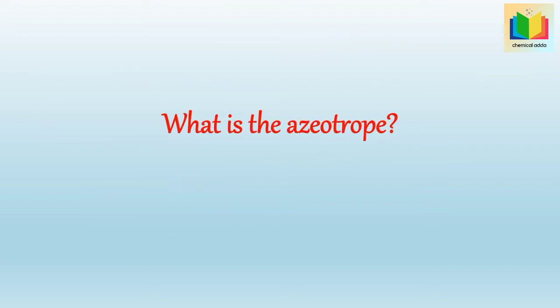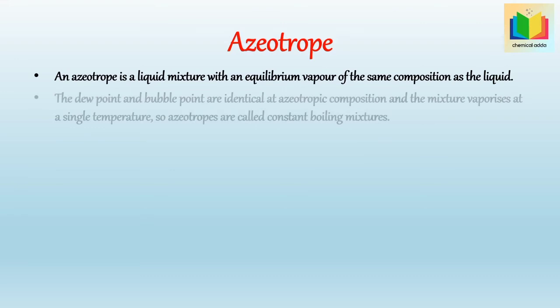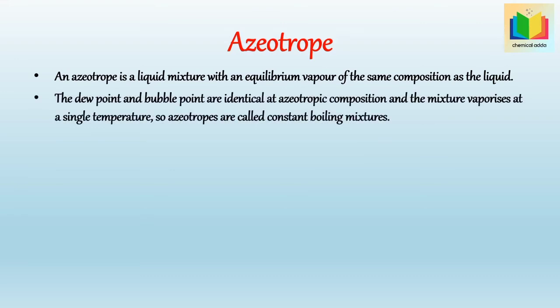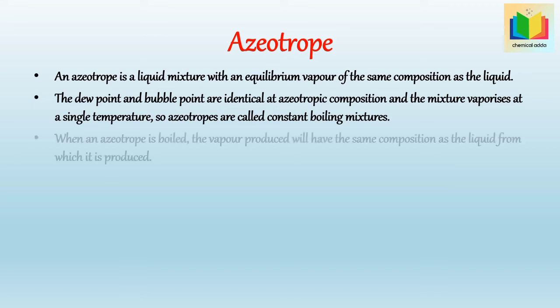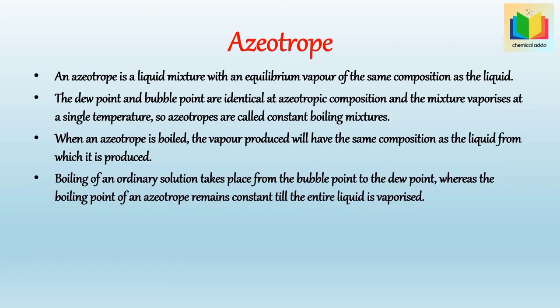What is an azeotrope? An azeotrope is a liquid mixture with an equilibrium vapor of the same composition as the liquid. The dew point and bubble point are identical at azeotropic composition, and the mixture vaporizes at a single temperature. Azeotropes are called constant boiling mixtures. When an azeotrope is boiled, the vapor produced will have the same composition as the liquid. Boiling of an ordinary solution takes place from the bubble point to the dew point, whereas the boiling point of an azeotrope remains constant until the entire liquid is vaporized.